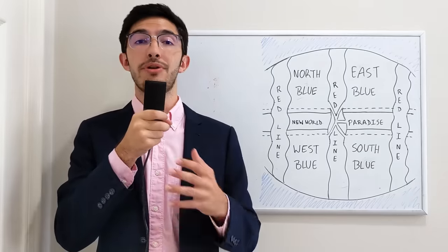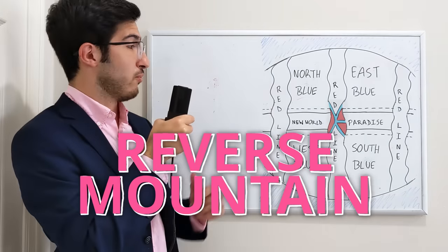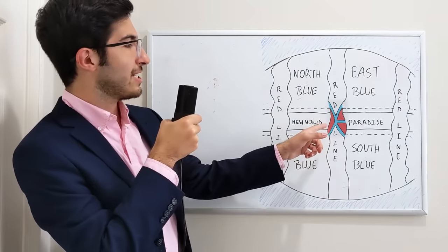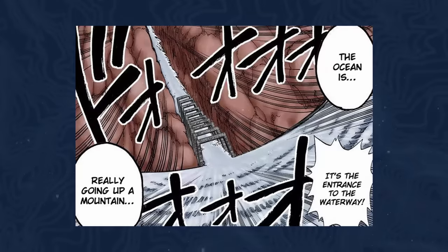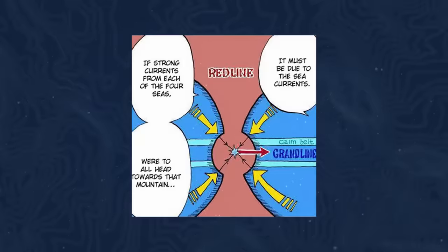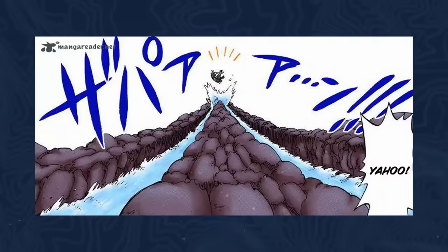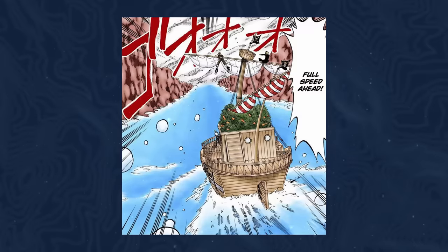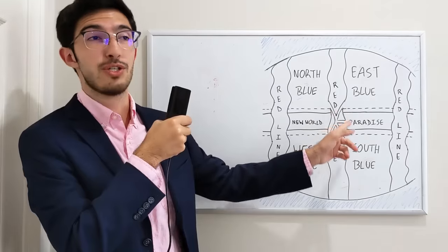And finally, and this is probably the most important entrance point, is Reverse Mountain, which is right here. And it is essentially a series of upside down waterfalls that travel from top to bottom that connect the north blue, east blue, west blue, and south blue, and go up to the top of the Red Line and then go back down into Paradise, which would be the entrance of the Grand Line.